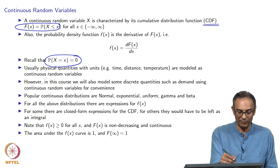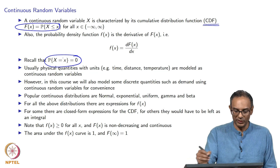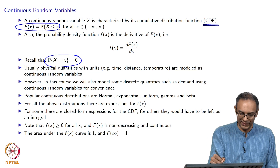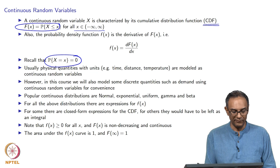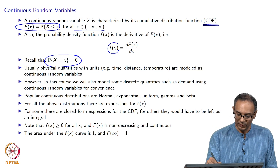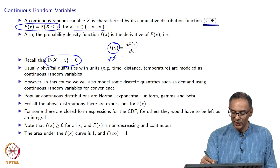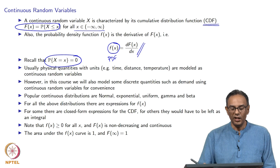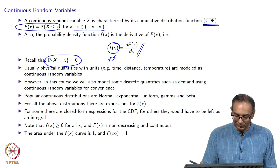We look instead at the Cumulative Distribution Function, the CDF, which is defined for all values of x between negative infinity and infinity. There is another parameter called the PDF, the probability density function, which is nothing but the derivative of the CDF with respect to x.